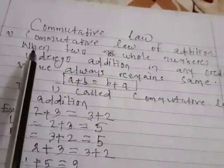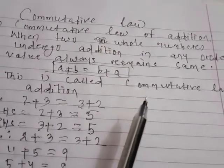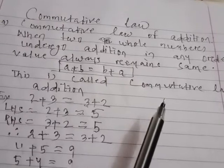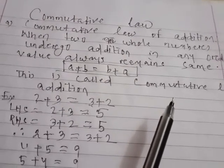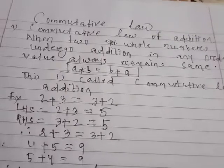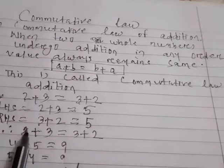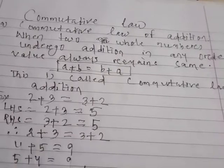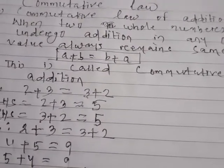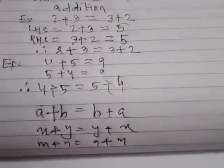Similarly, the commutative law also applies to multiplication. When two whole numbers undergo multiplication in any order, their value remains the same. This is called the commutative law of multiplication.